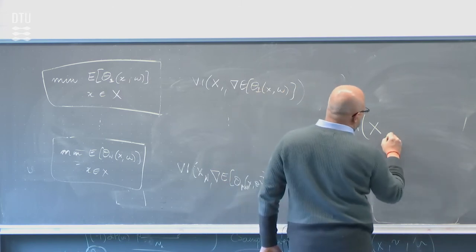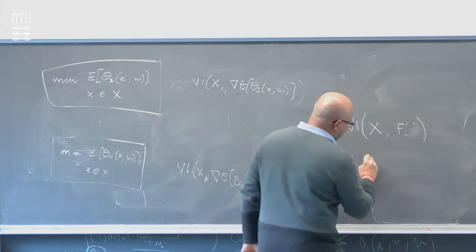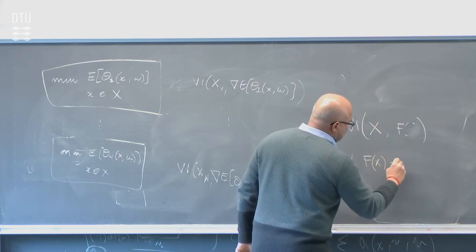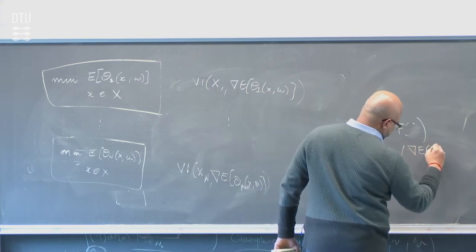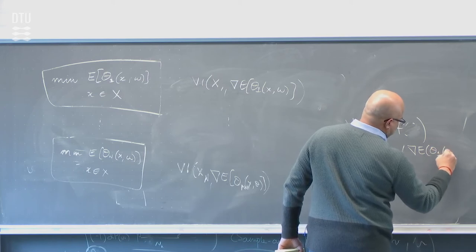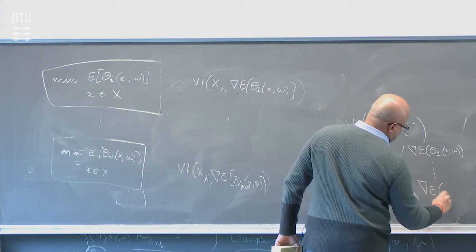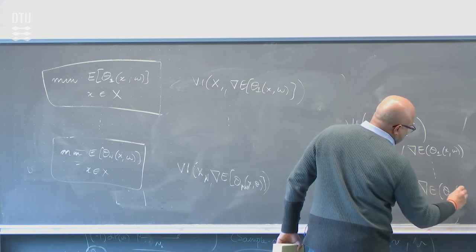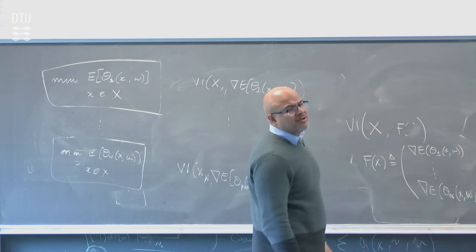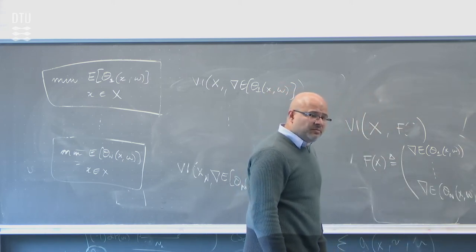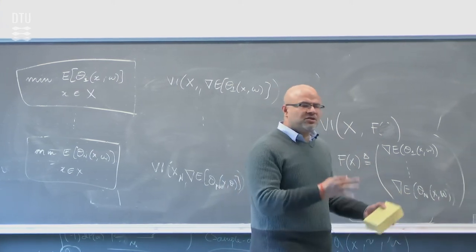You have x and f(x), where f(x) is defined as the gradient. Just as we have a stochastic optimization problem, we have a stochastic variational inequality problem. I'm going to talk about those, but before I do that I want to expose you to this framework.